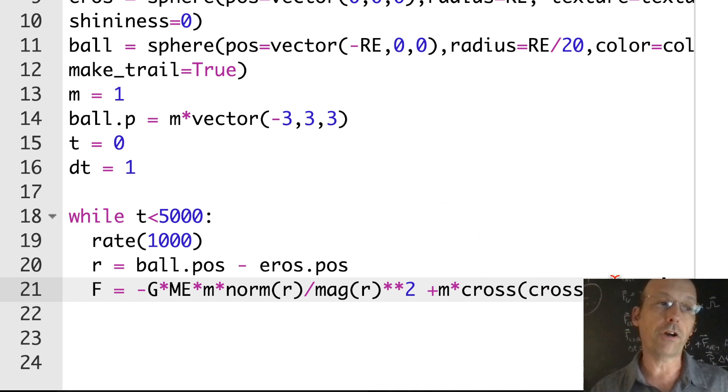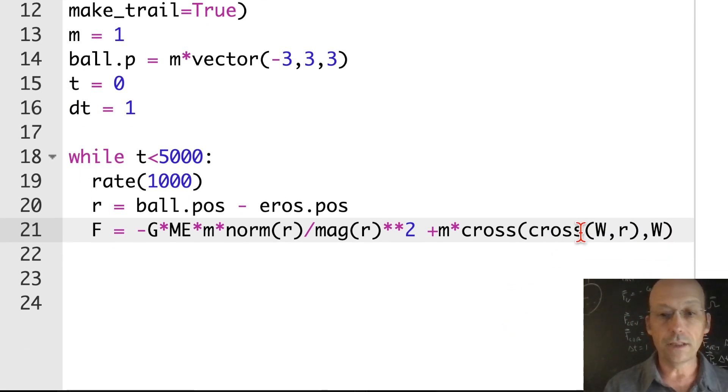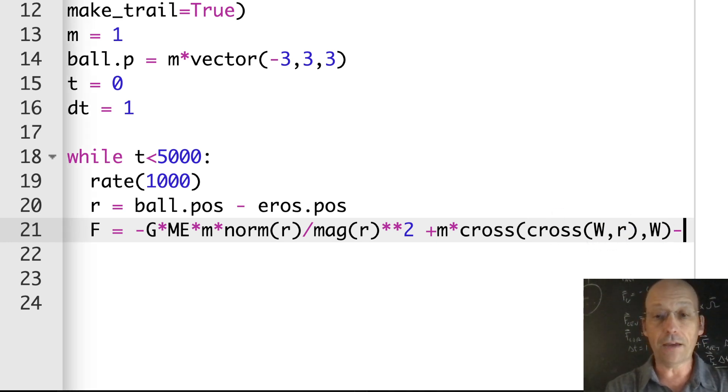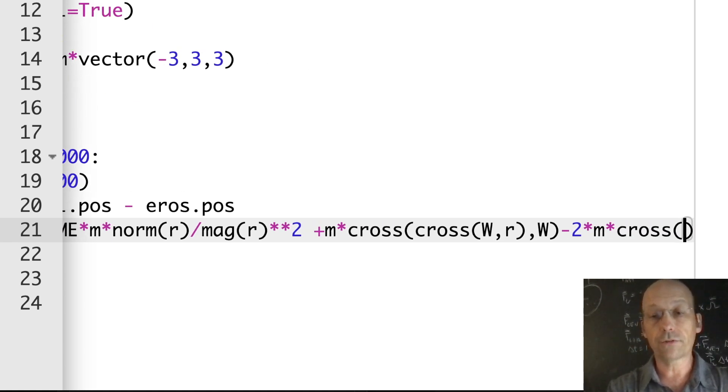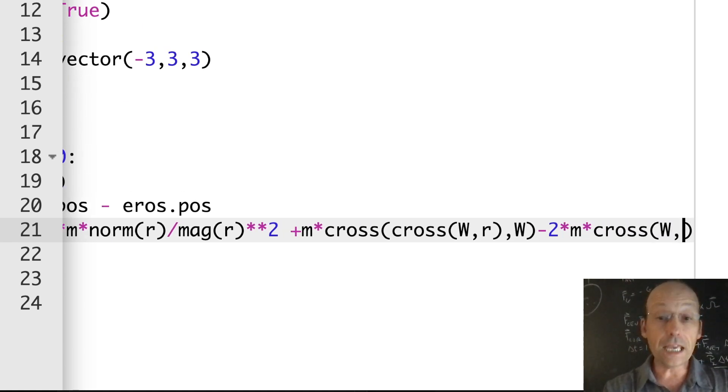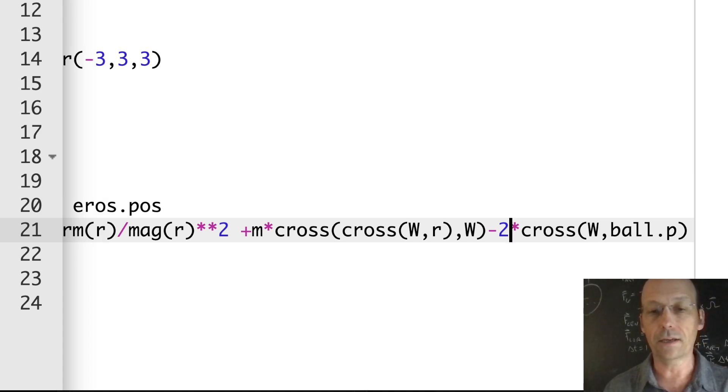Now I need to do the centrifugal force. Let's do that one next. It's going to be plus m times cross omega r omega. I have a double cross right there that you can't even see because my big old head is in the way. This is going to be omega cross r, all of that cross omega, which is exactly the equation I had up there.